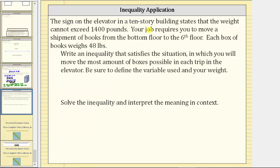The sign on the elevator in a 10-story building states that the weight cannot exceed 1,400 pounds. Your job requires you to move a shipment of books from the bottom floor to the sixth floor. Each box of books weighs 48 pounds.